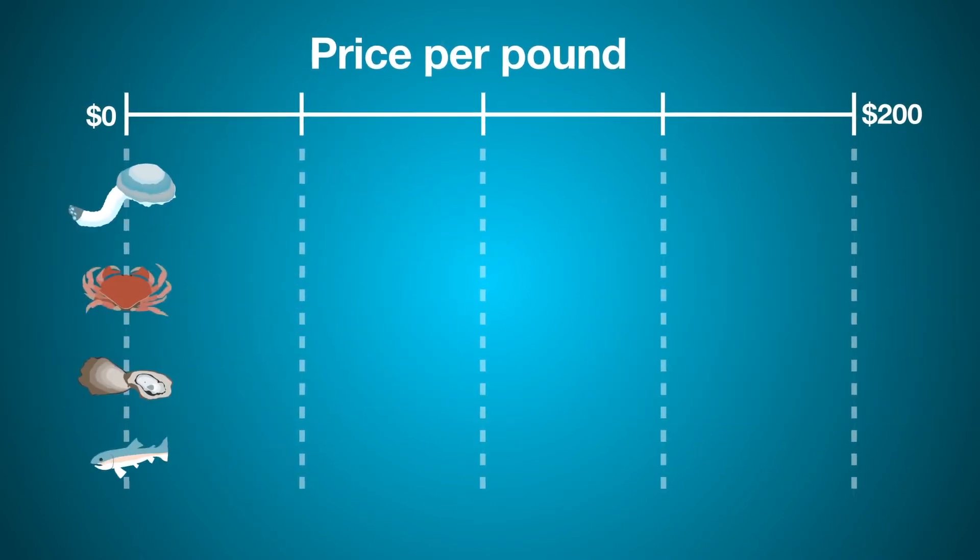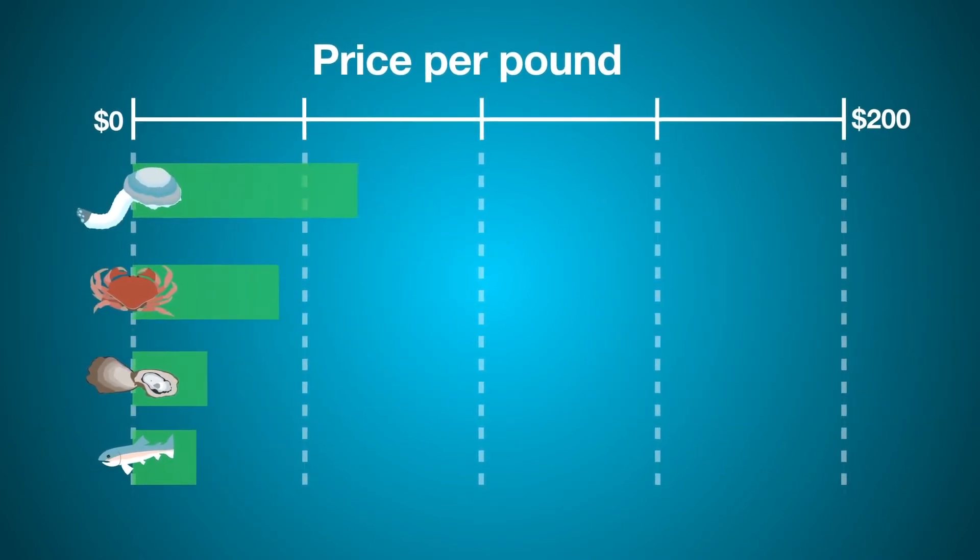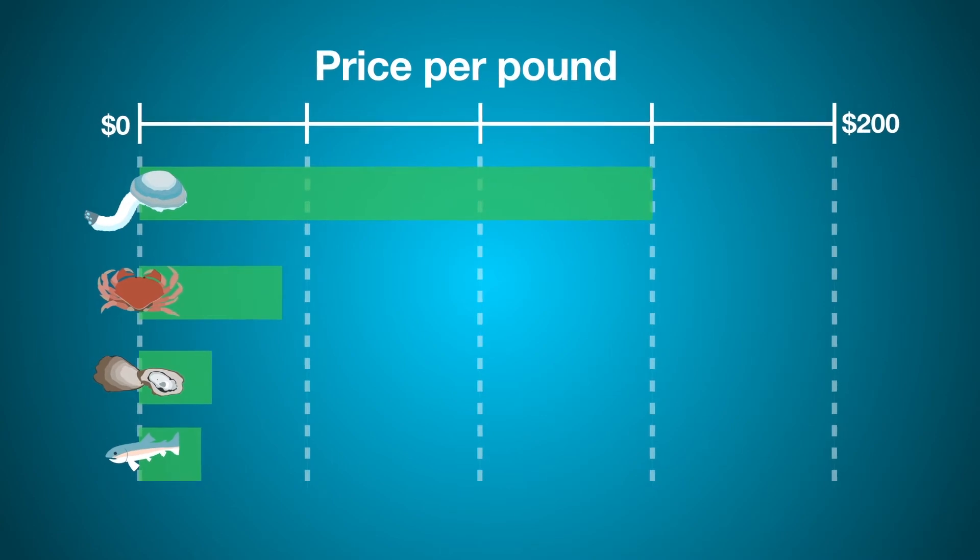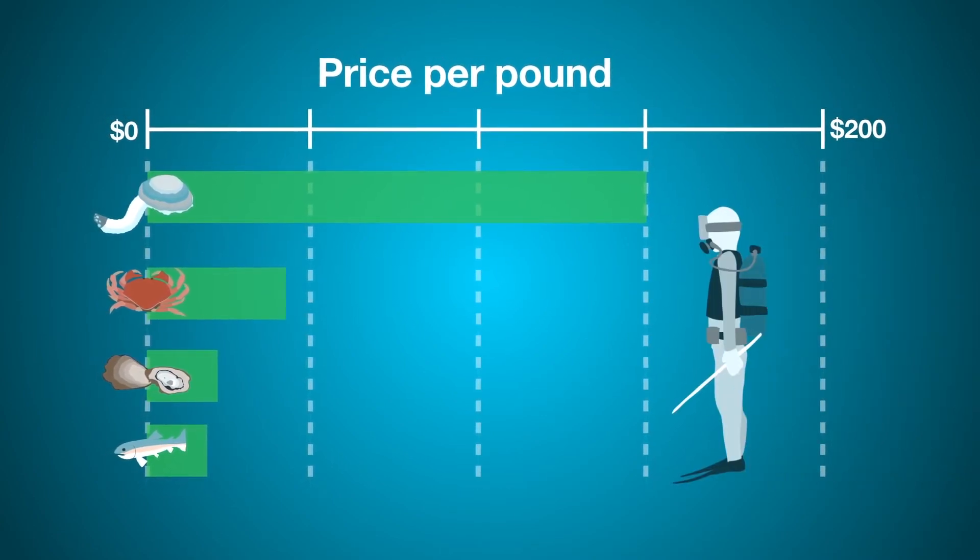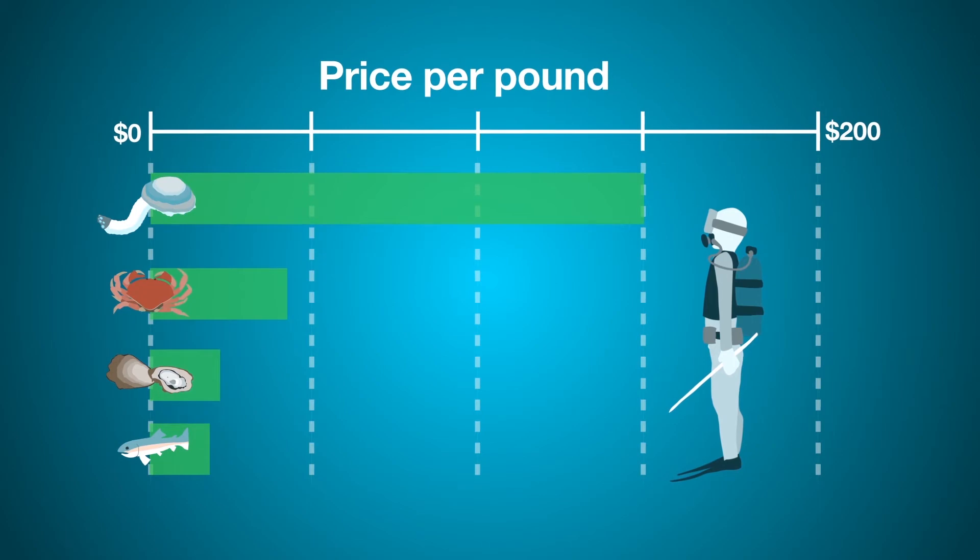This rising demand has sent geoduck retail prices to as high as $150 per pound. And soaring prices create a big incentive for poachers. Here's how it works.